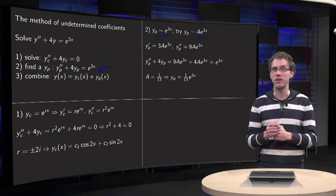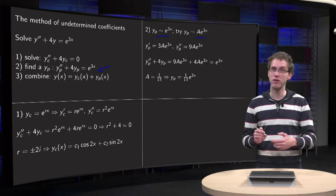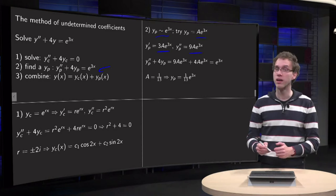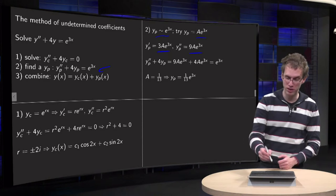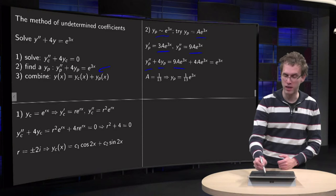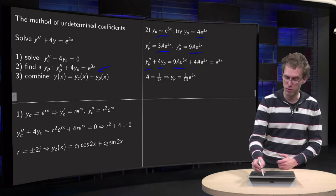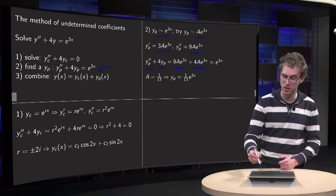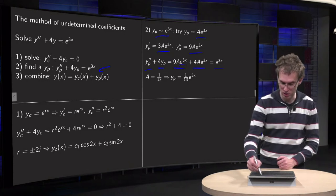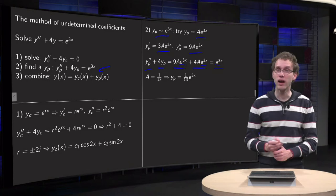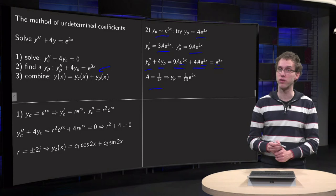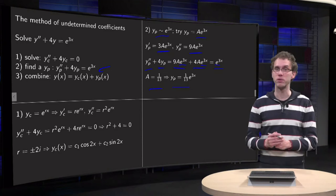Well, if you have done the guess, then all you have to do is differentiate and plug your guess in. So you compute y prime and y double, and plug them into your differential equation, y'' + 4y. 9A e^(3x) + 4A e^(3x) equals the right side e^(3x). And you see that e^(3x) cancels out. And you are left with 13A = 1, so A = 1/13, and there you have your particular solution.